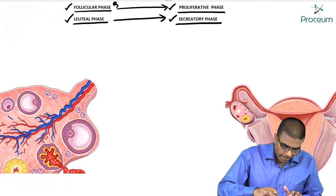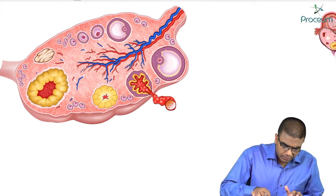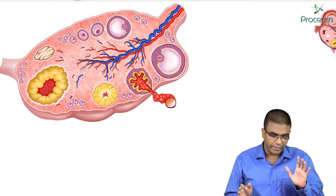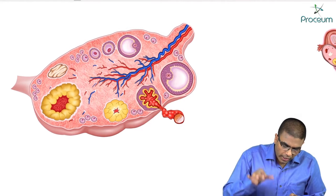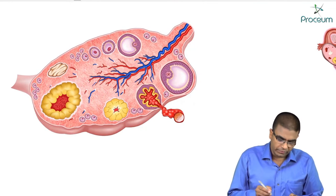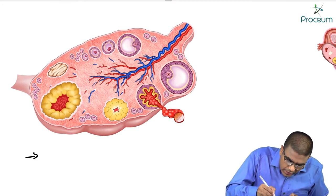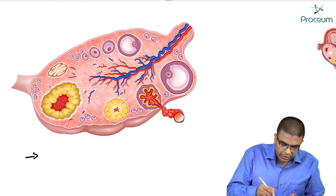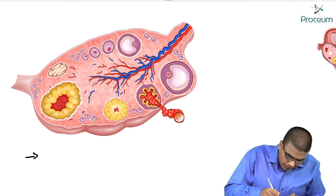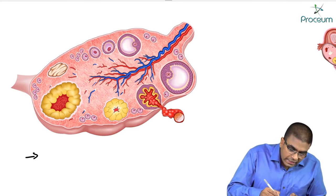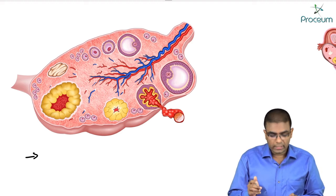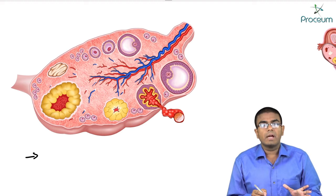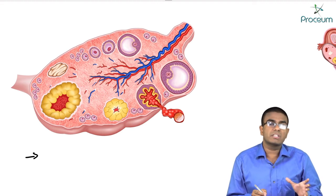Now let's start from the basics. What I am showing you is the cross-section of an ovary. In the cross-section of an ovary, you can see follicles of different sizes and different developmental stages.